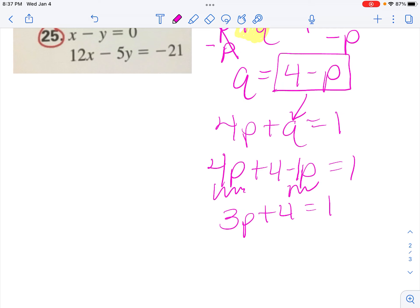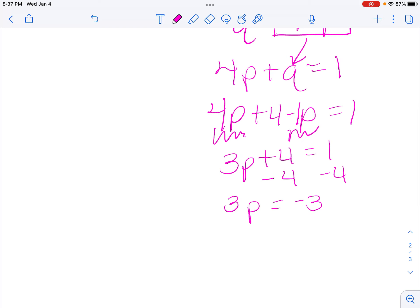Then to get 3p by itself, I have to subtract 4 from each side, and I get 3p equals negative 3. The opposite operation of multiplying is dividing, and I get p equals negative 3 divided by 3 is negative 1.